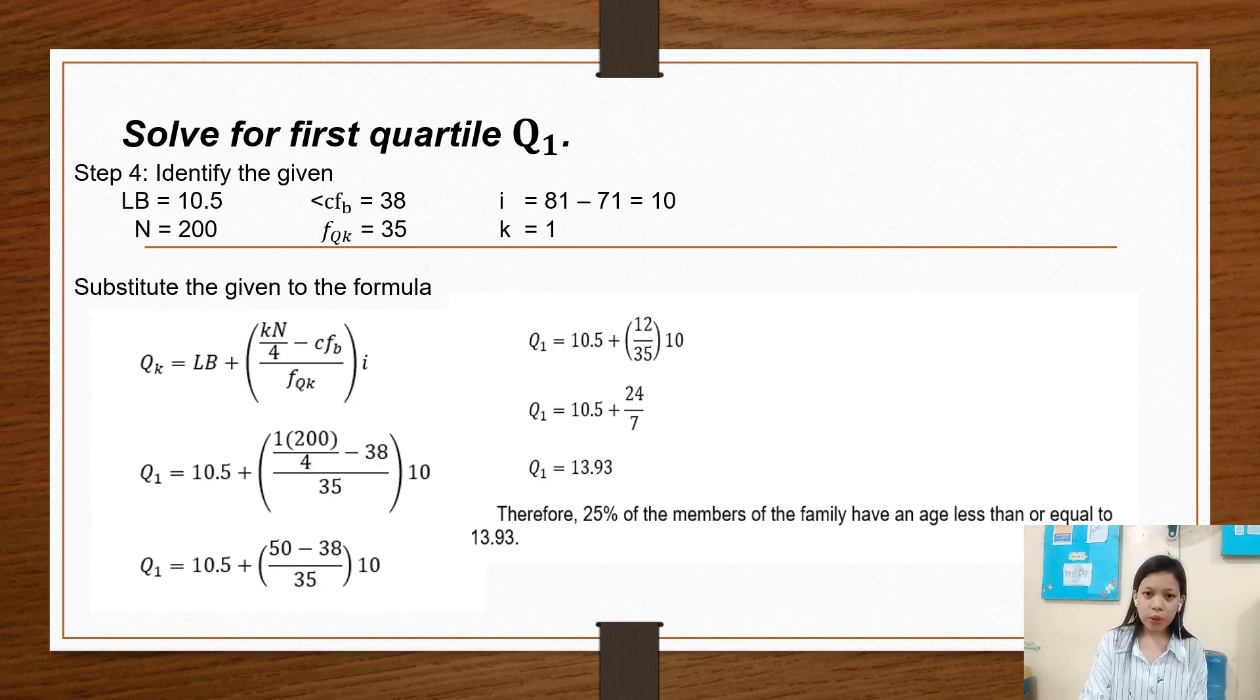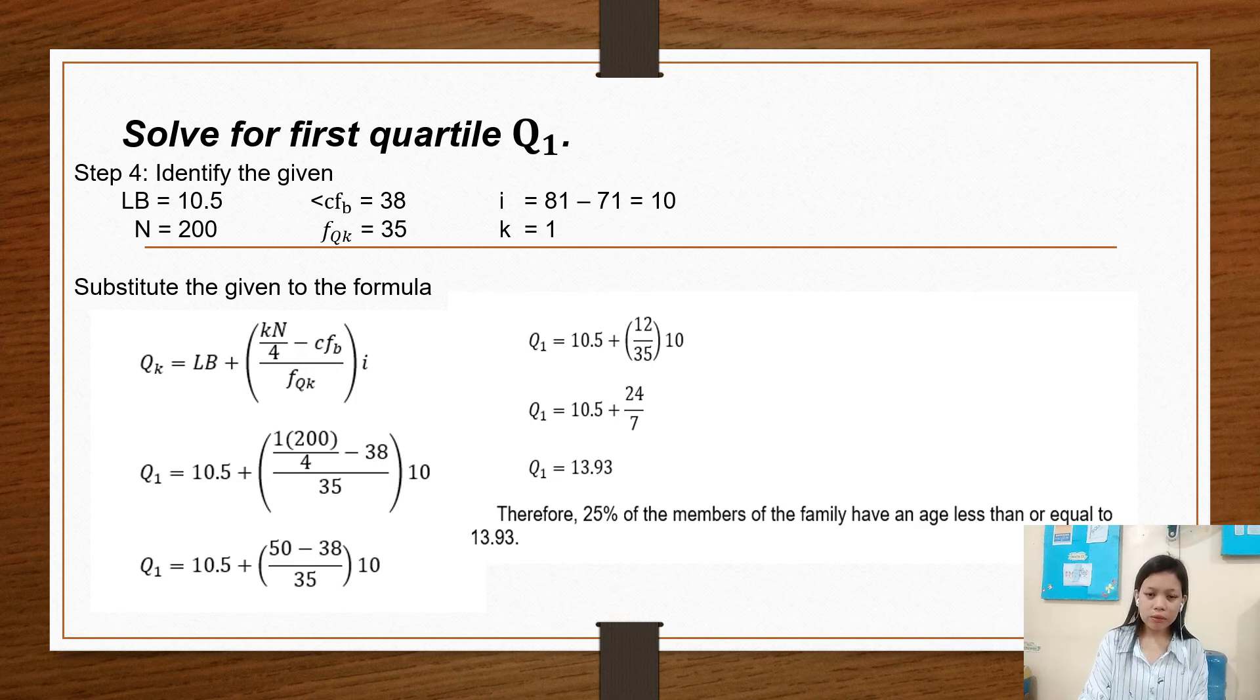So for first quartile, identify the given. So our LB is 10.5. Our N or total number of data is 200. Our cumulative frequency before is 38. Interval is 10. K is Q sub 1 which is 1. And our frequency is 35.